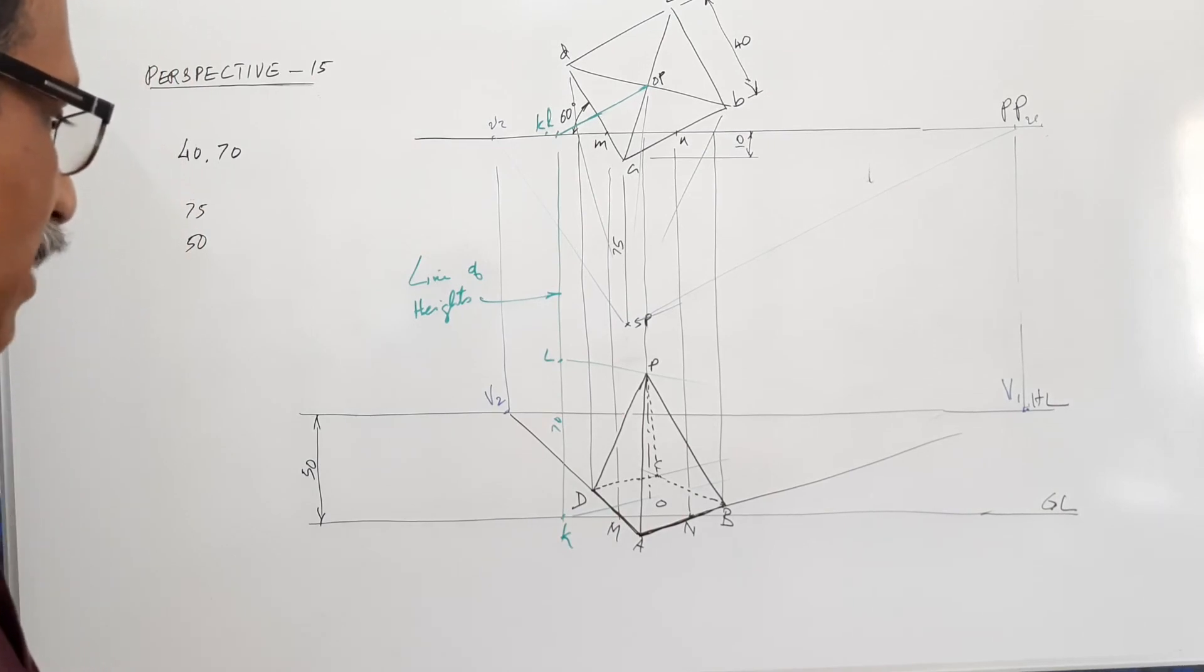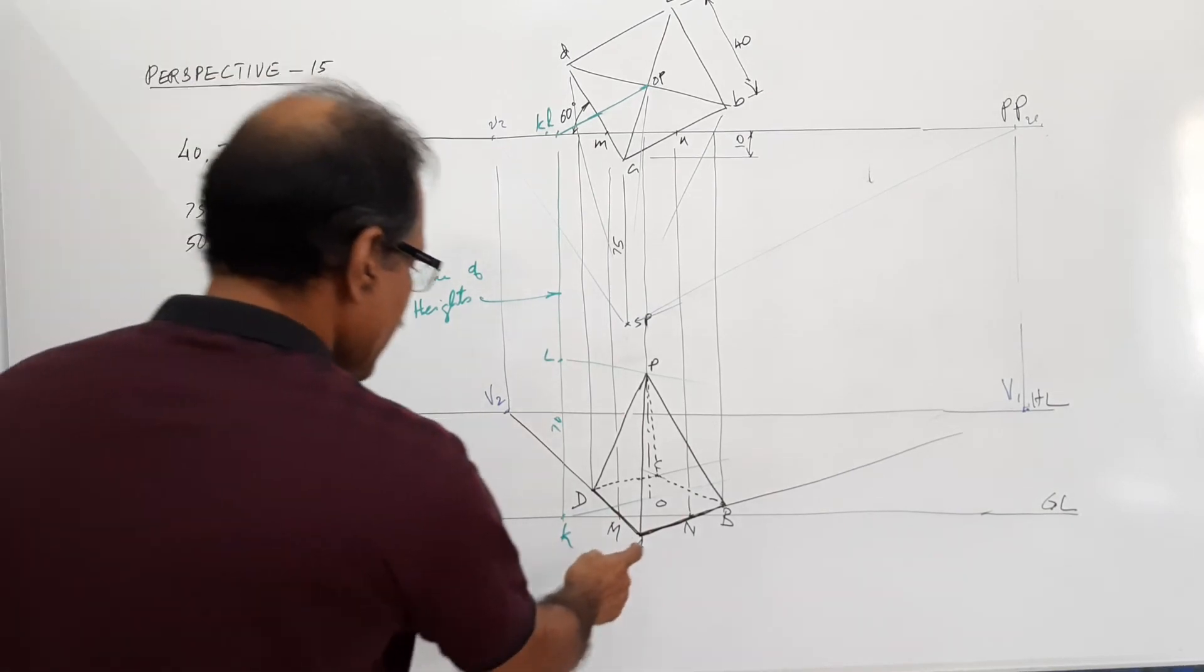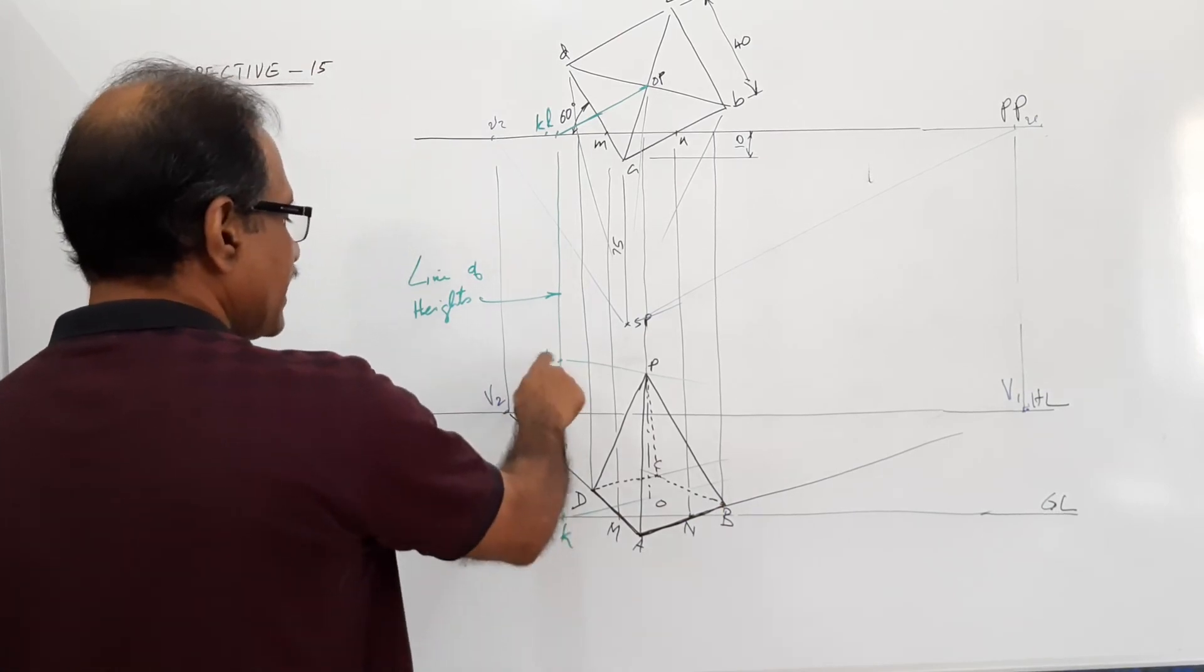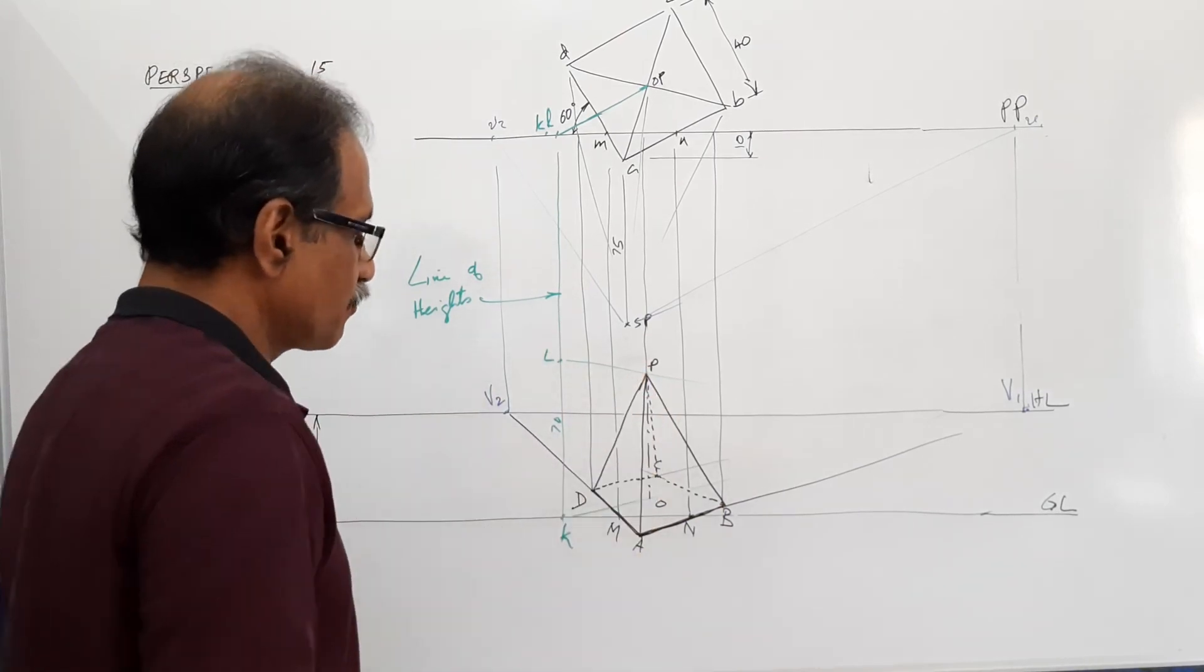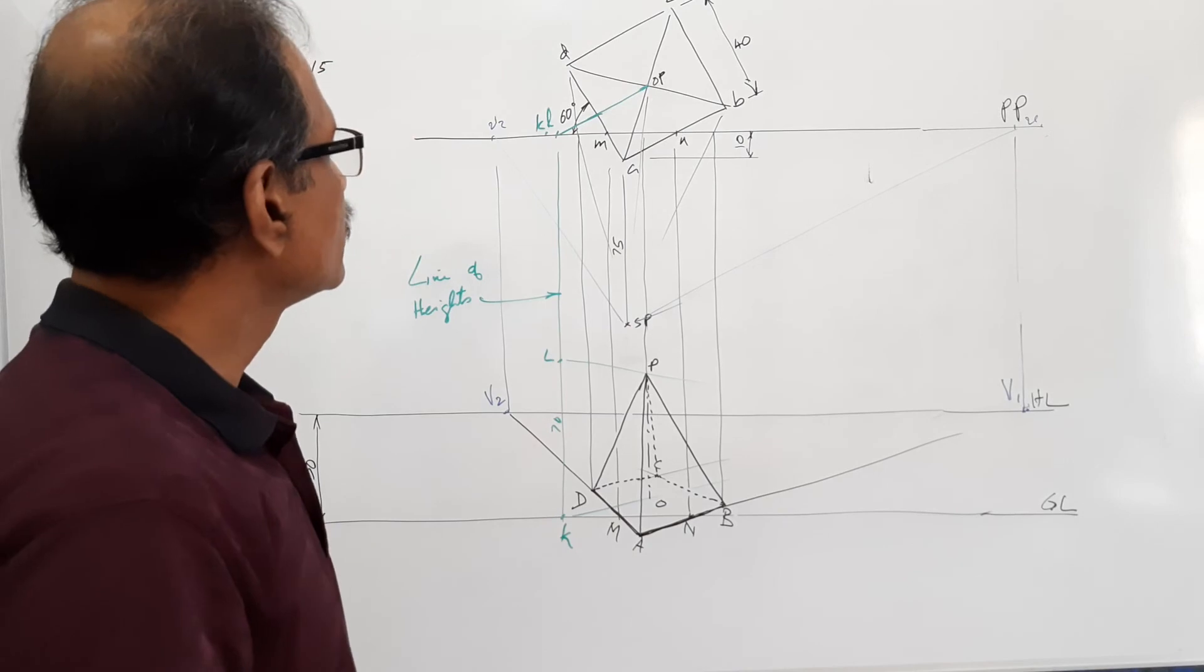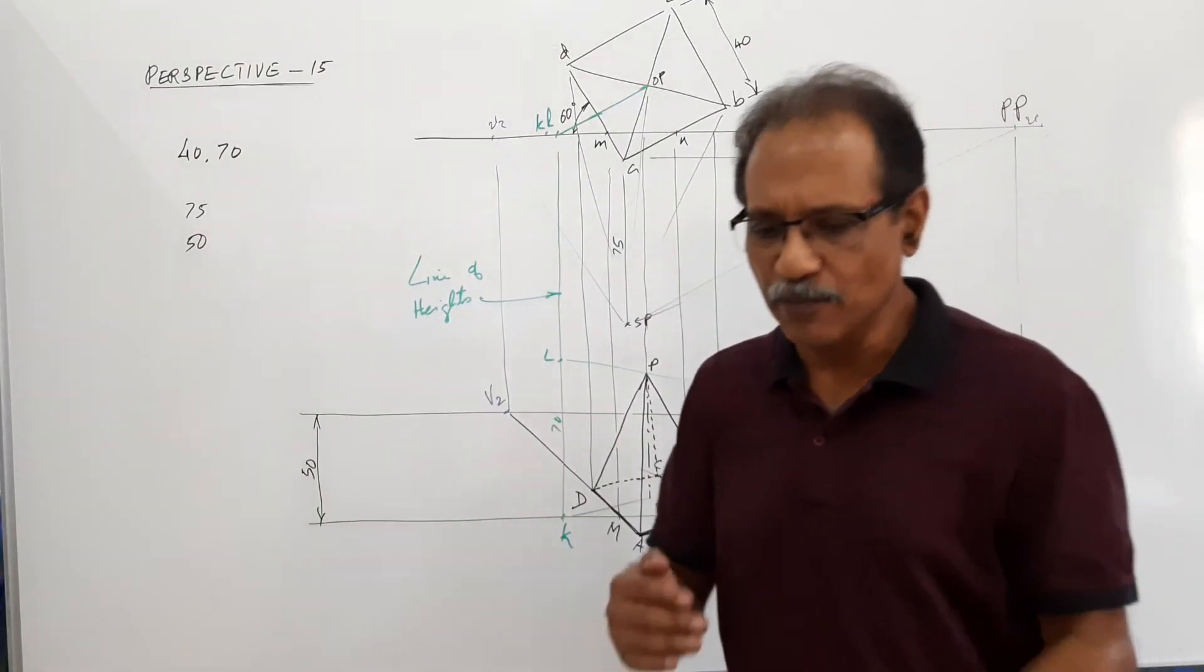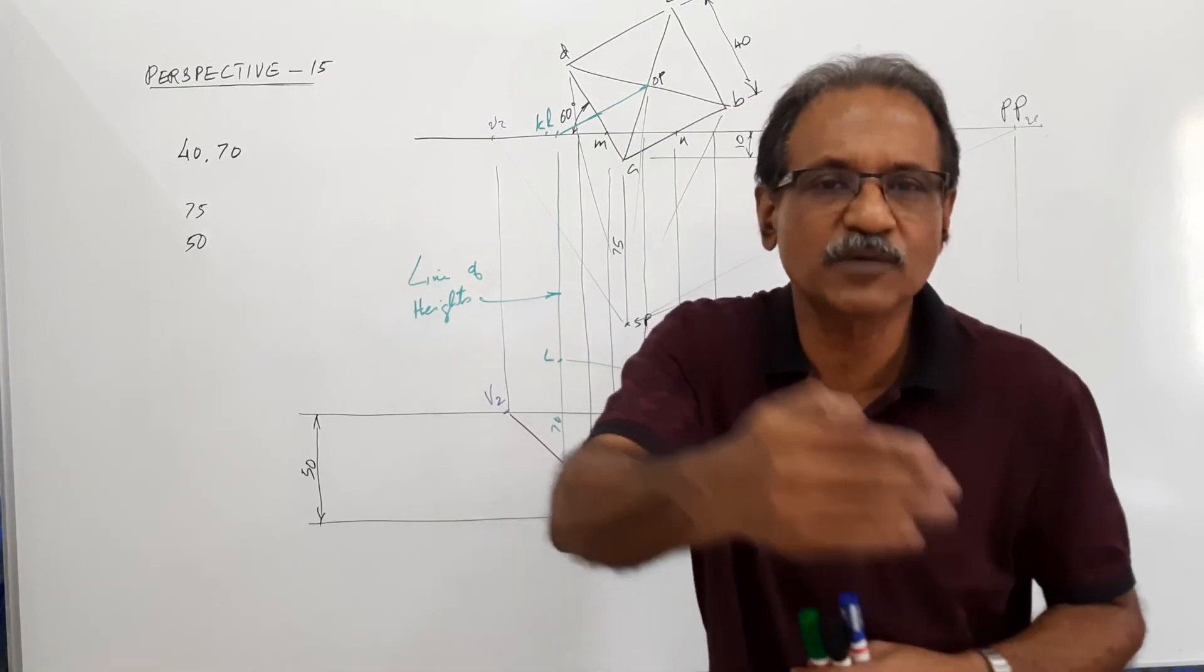You have got the pyramid A, B, C, D, O, P axis. This side KL is 70 whereas OP is not 70. Great. It's a very good question. You can have similar questions where a part of the object crosses picture plane and comes in front.